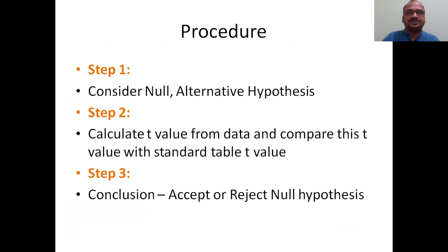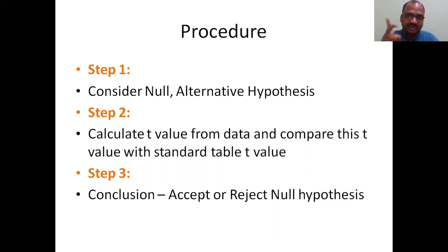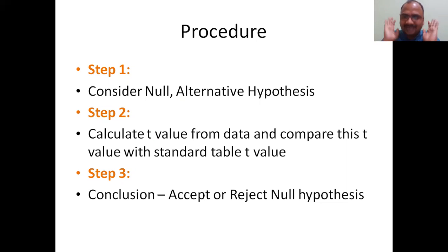The procedure has three steps. Step 1: state the null hypothesis and alternative hypothesis. Step 2: calculate the t-value (Type 3) and compare it with the standard table t-value. Step 3: conclusion — either accept or reject the null hypothesis.